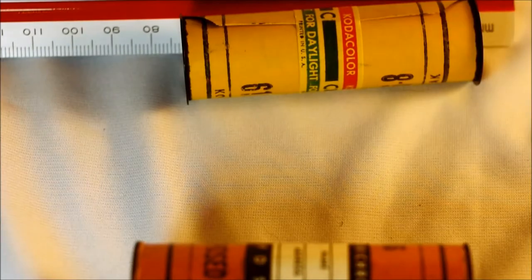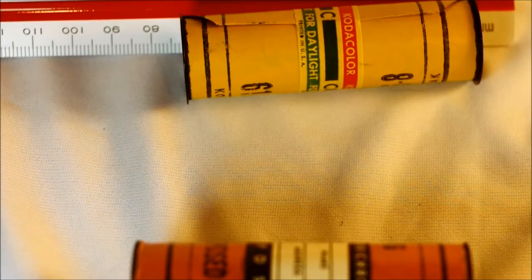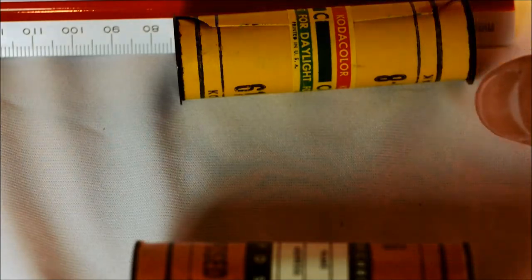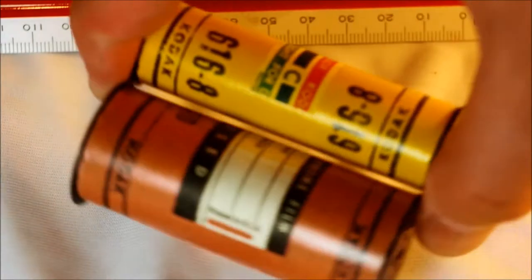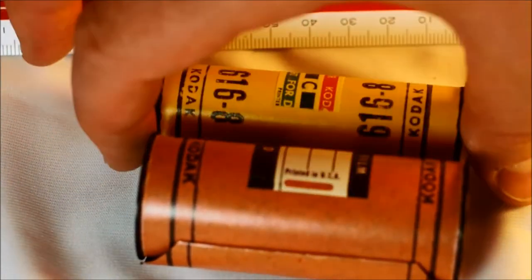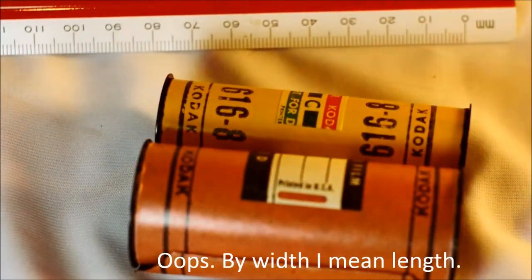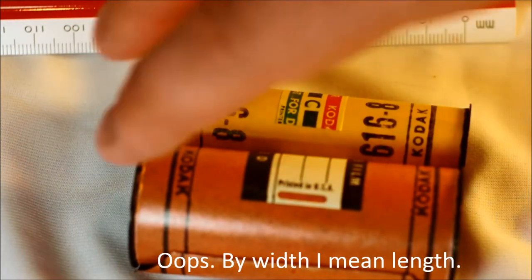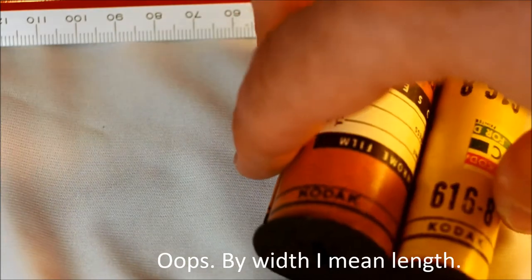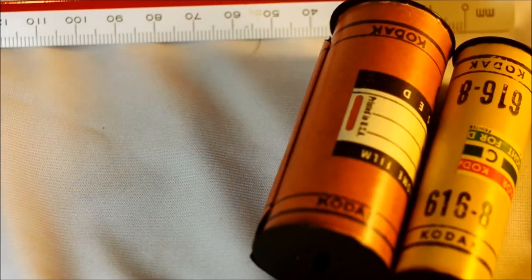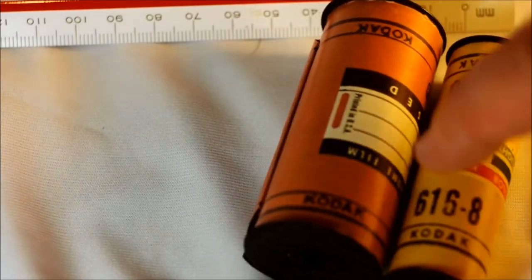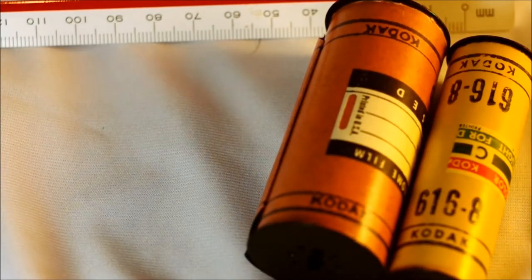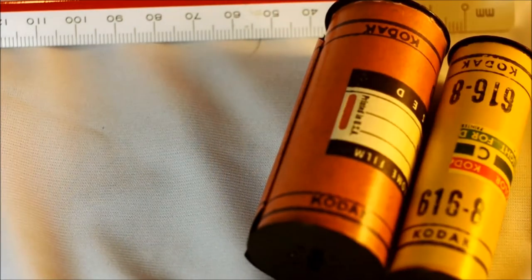The 616 spool is also about 72, maybe 74 millimeters. But in that ballpark, you can see that the spools are the same width. The difference is in the flange size and the opening in the middle. These spools have a large core, these have a narrow core. It's the same thing with 120 and 620: large inner core, narrow inner core.